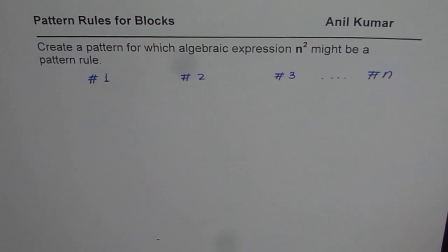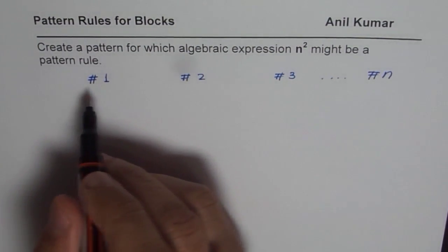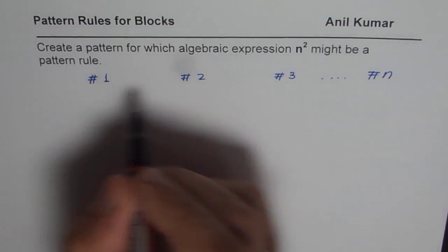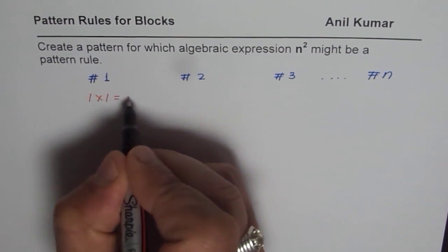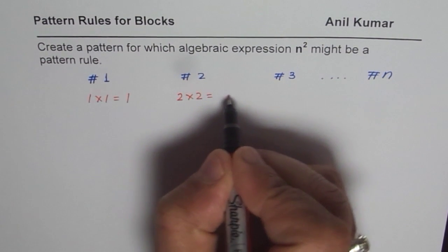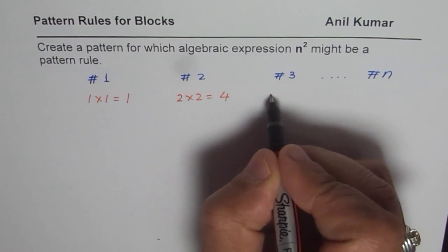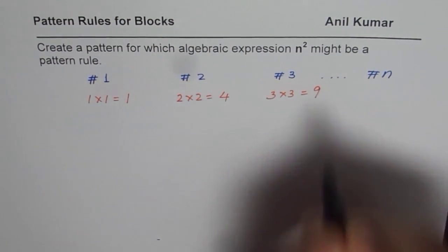Now when I say that the rule is n², that means the number of blocks I have here is how many? In this case, n is 1, right? So it will be 1 times 1 which is 1. 2 means 2 times 2, that means 4 blocks. And here I have to make something with 3 times 3, that means 9 blocks.